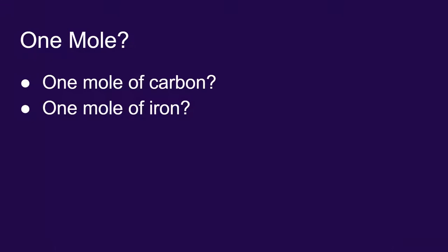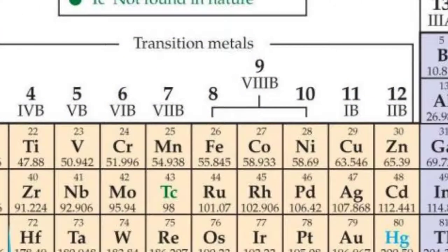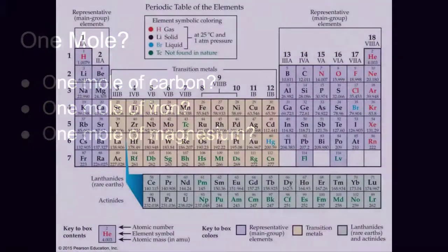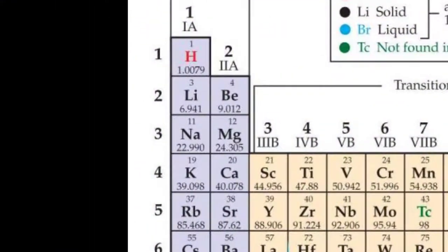If you have a mole of iron, iron has an atomic mass of 55.845 amu, so one mole is 55.845 grams. A mole of magnesium would be 24.305 grams.